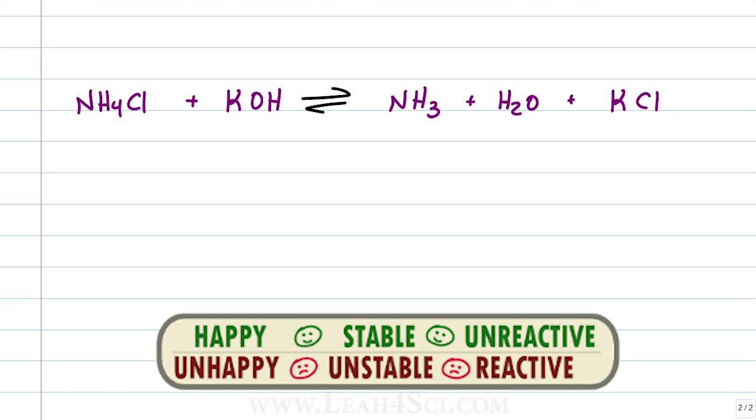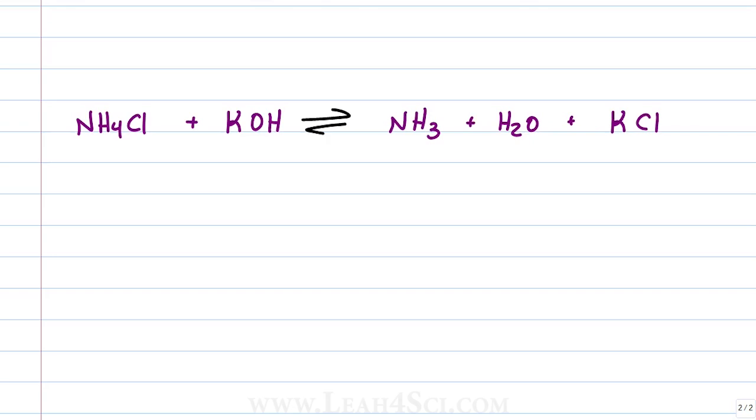When trying to determine the direction of equilibrium, we want to see if the molecules on the right or left are more stable and choose the more stable side. Since this is an acid base question, we're going to use the mnemonic KARYO to help us break it down, but first let's pair up what's reacting to identify the acids and bases so we have what to compare.